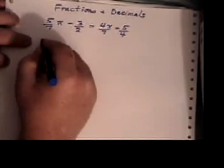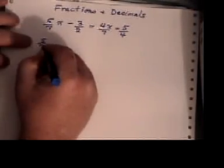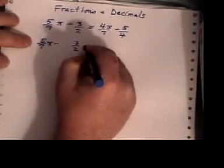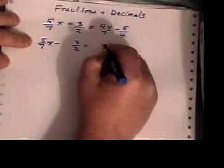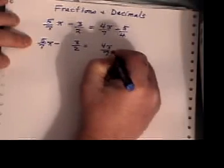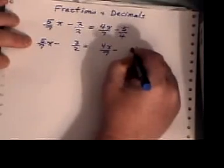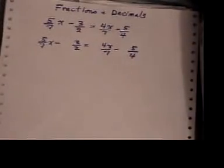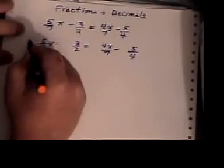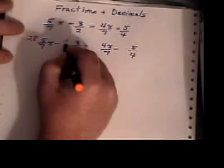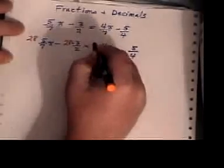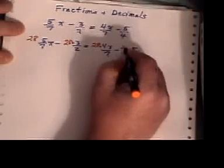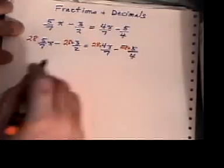So now what I do is I'm going to write out my question and leave some spaces and take the number 28 and multiply it by each of my terms. That's all four terms on both sides.